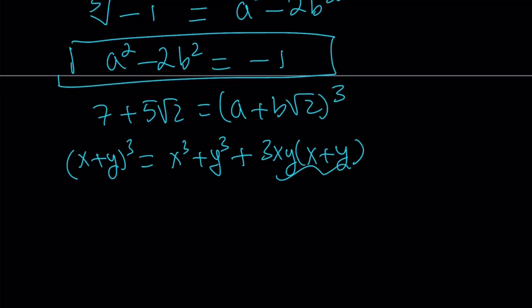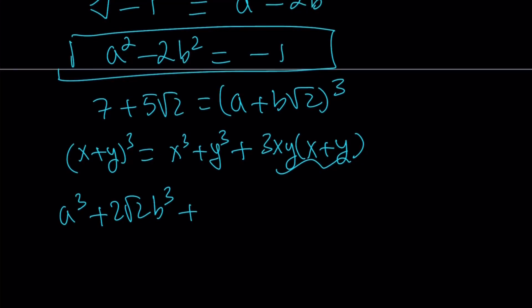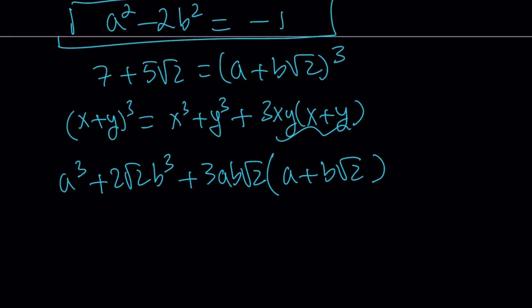X is a in this case and y is b root 2. So that's going to be x cubed which is this and then y cubed is going to be 2 root 2 times b cubed, plus 3ab root 2 times a plus b root 2. So that's just the original expression, and that should equal 7 plus 5 root 2.